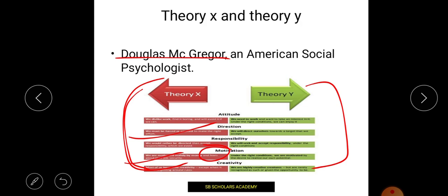In Theory Y, it is the opposite — your own potential drives you. It is your work and you have to do it. In the NET example: Theory Y means your own aim says to study. You are self-motivated; you don't need incentives, bonuses, security, or external direction. You have a positive attitude. Similarly, in Theory X you show no creativity, whereas in Theory Y you are highly creative and give your best.